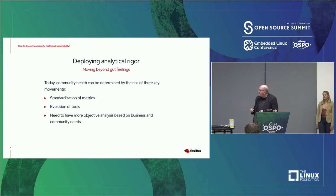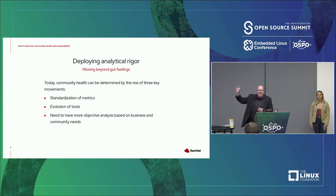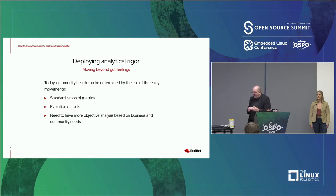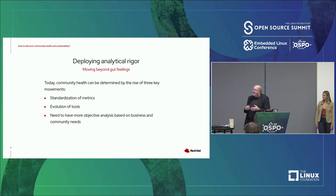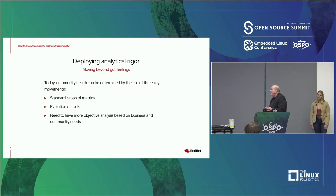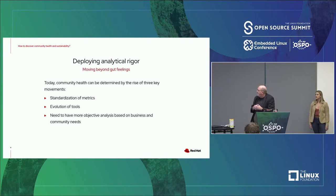Parallel to that was the evolution of tools that would take those metrics and actually produce analytical results. From Project CHAOSS, there is Augur, there is Cauldron. There's a wealth of tools from the company called Bitergia that are based on Grimoire Labs, Elasticsearch, and other tools like that. Red Hat also contributed one called Prospector, which we built way back when. So there are a lot of tools in the CHAOSS environment that are being used, and we are taking those and doing some other things too.